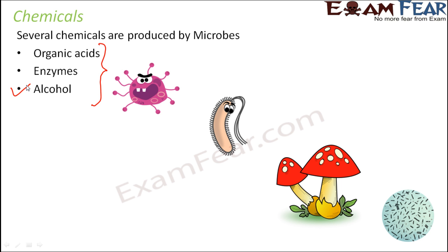Alcohols we have almost covered — we saw how alcohol is produced from microbes. Yeast produces ethanol, and this alcohol is used in many other chemical reactions. Microbes also produce a lot of enzymes, and we all know that enzymes are extremely important because they help many chemical reactions to take place.